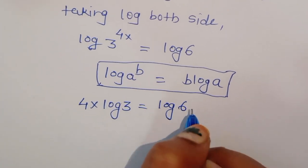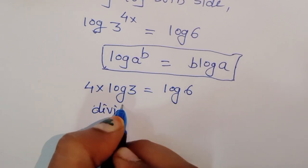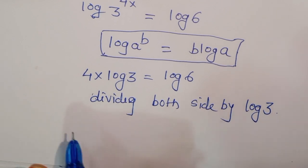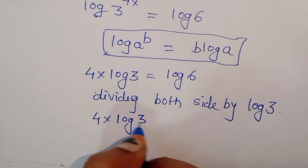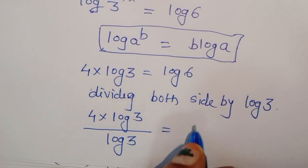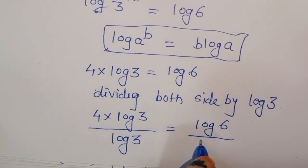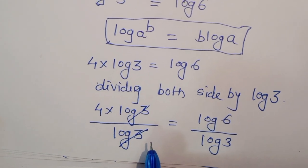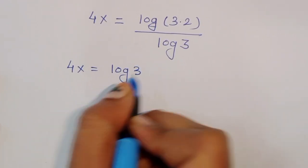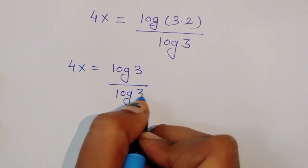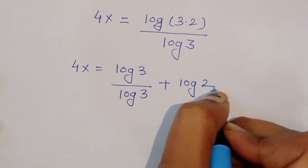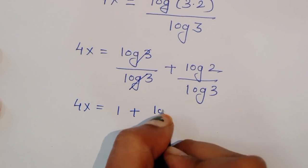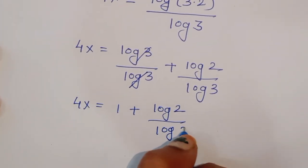Now dividing both sides by log of 3, we get 4x times log of 3 divided by log of 3 is equal to log of 6 divided by log of 3. The log 3 terms cancel, so 4x is equal to log of 6 divided by log of 3, which equals 1 plus log of 2 divided by log of 3.